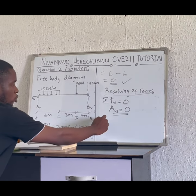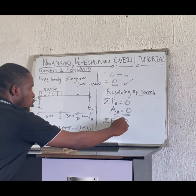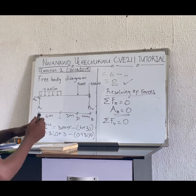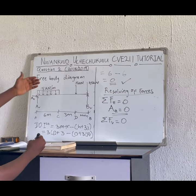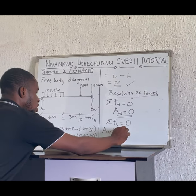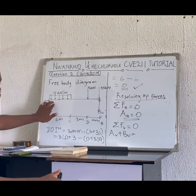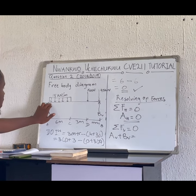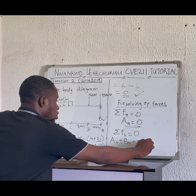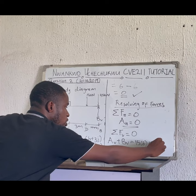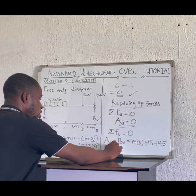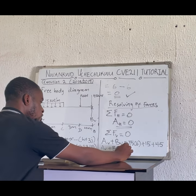The summation of vertical forces must also equal zero, meaning upward forces equal downward forces. The upward forces are AV and BV. The downward forces are: the UDL of 15 kN/m over 6 meters (15 × 6), plus a point load of 15 kN, plus another point load of 45 kN. So AV + BV = 90 + 15 + 45 = 150 kilonewtons.